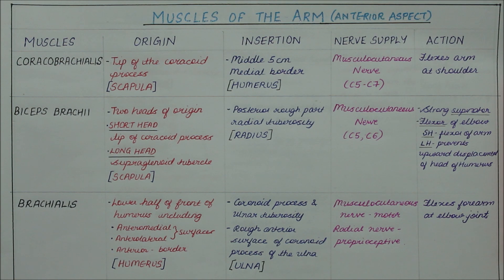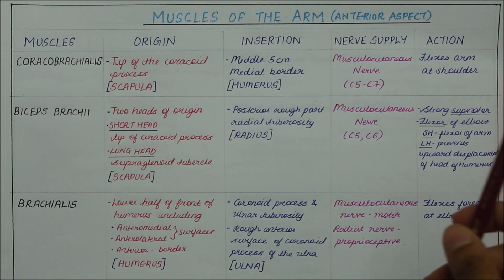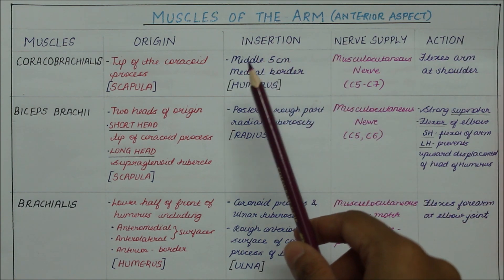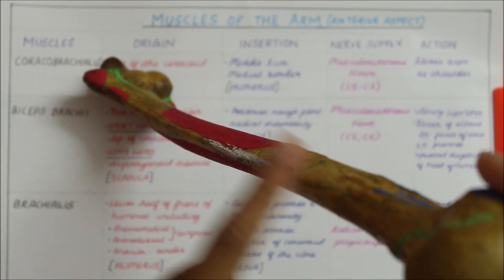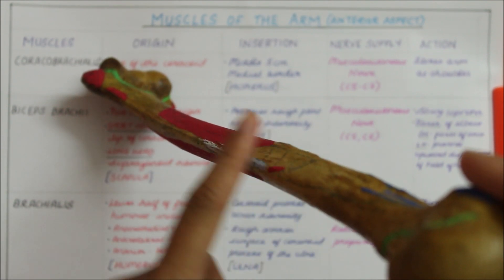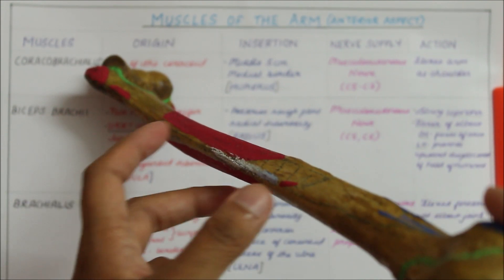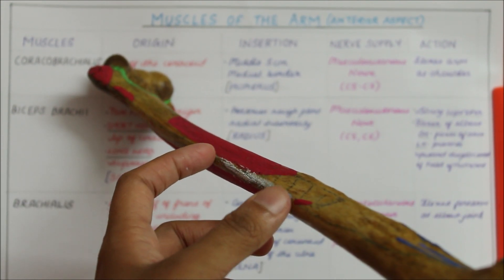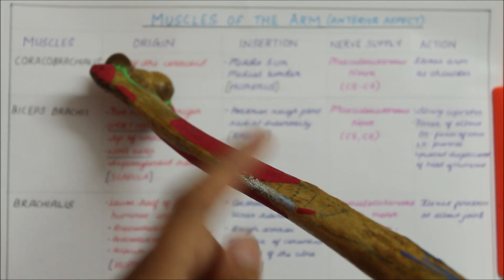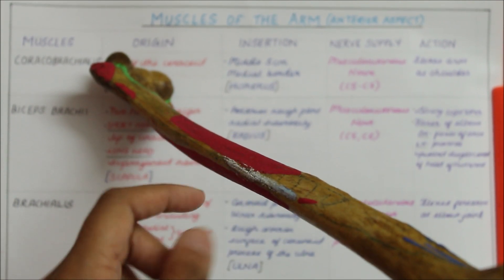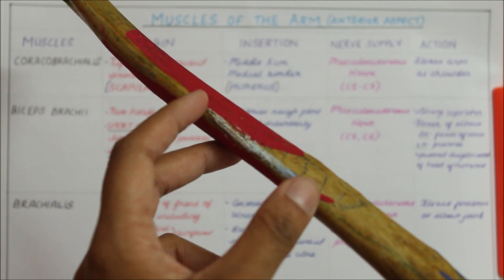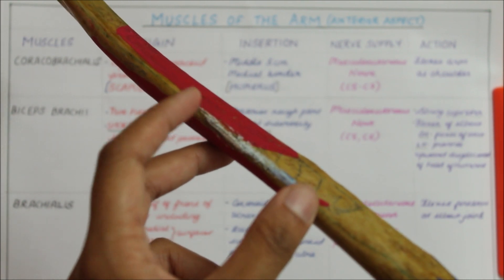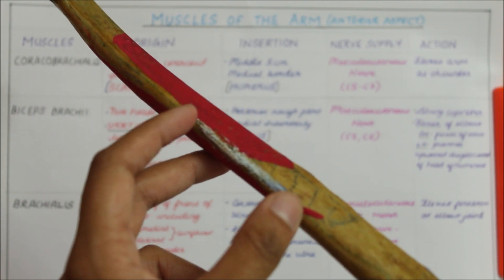Moving on to the insertion, the coracobrachialis is inserted into the middle 5 cm of the medial border of the humerus. This is the medial border of the humerus, and the white area represents the area of insertion of the coracobrachialis right here.